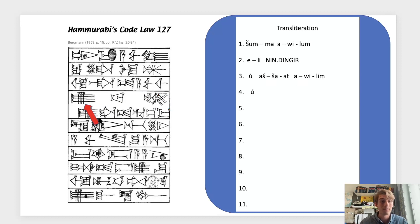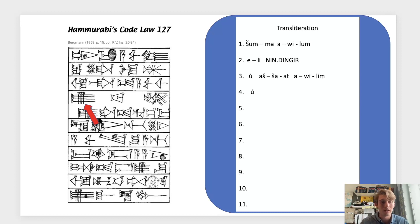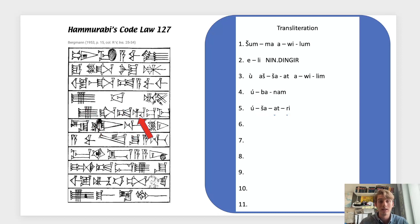On line four we have the U2 sign — showing that U3 and U2 appear near each other, giving the same sound but as different signs. It's helpful in transliteration to denote that with these dashes so we can quickly identify which sign gave us the reading. The U2 sign is followed by Ba, Nam. On line five we have U2 again, followed by Sha, At, Ri, Iṭṣ (with that Ṣade), Ma.